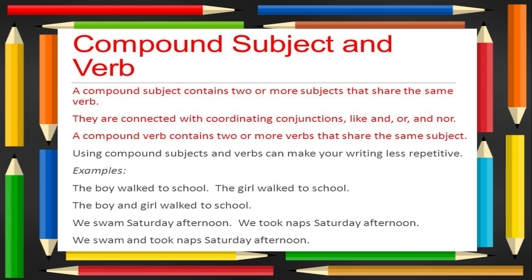What is a compound subject and verb? A compound subject contains two or more subjects that share the same verb. They are connected with coordinating conjunctions like 'and,' 'or,' and 'nor.' A compound verb contains two or more verbs that share the same subject. Using compound subjects and verbs can make your writing less repetitive. For example: 'The boy walked to school.' 'The boy and girl walked to school.' 'We swam Saturday afternoon.' 'We took naps Saturday afternoon.' 'We swam and took naps Saturday afternoon.'